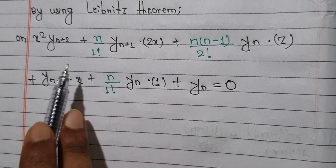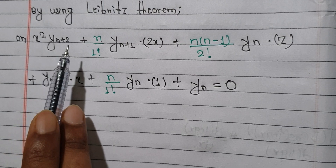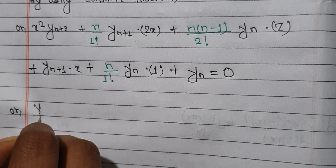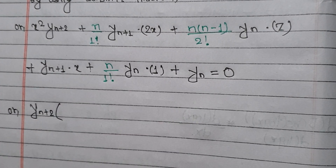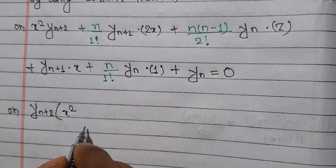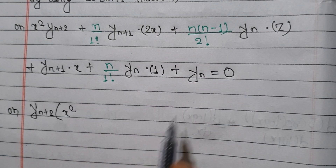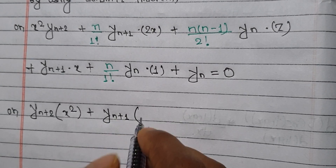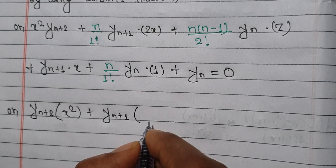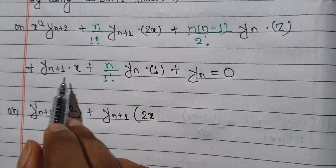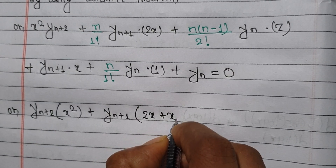Properly, like yn+2, you don't have yn+2. The x² multiplied — so you have x square — so x² into yn+2, plus 2x into yn+1.